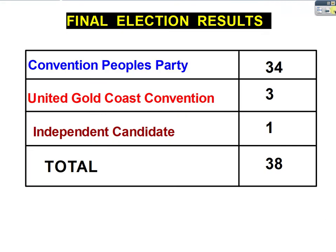At the end of the day, the final election results went this way: the Convention People's Party had 34 of the 38 total seats elected on that day. The UGCC had only three members, and the independent candidate had one person elected. That was the final election result on that day.